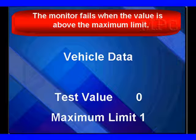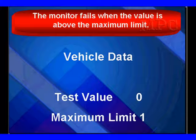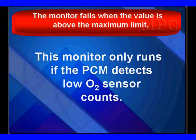When it exceeds a maximum limit, that's the typical fault condition. We also have a minimum limit on some vehicles. The maximum limit looks at the ratio, and the minimum limit looks at the minimum number of transitions. It's a dual sensor setup.